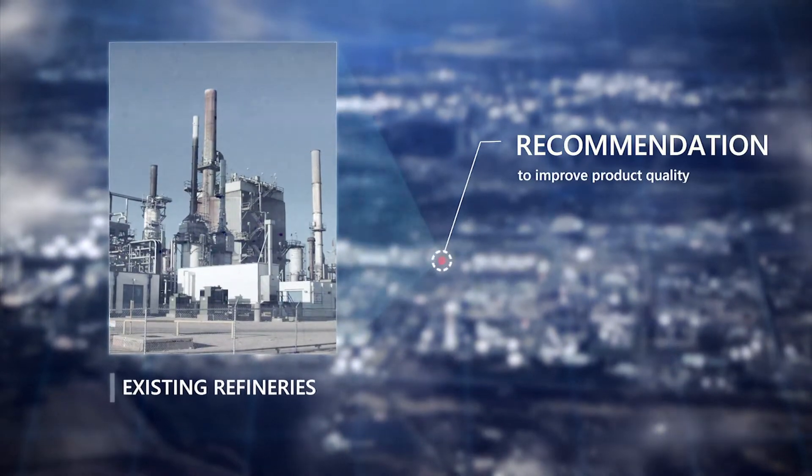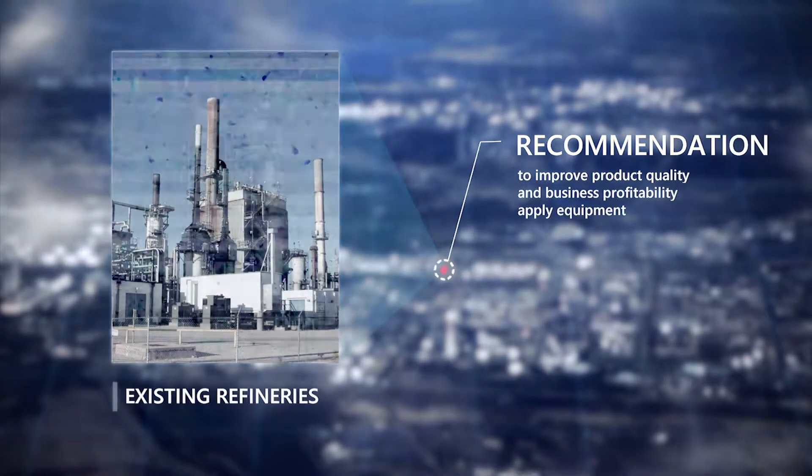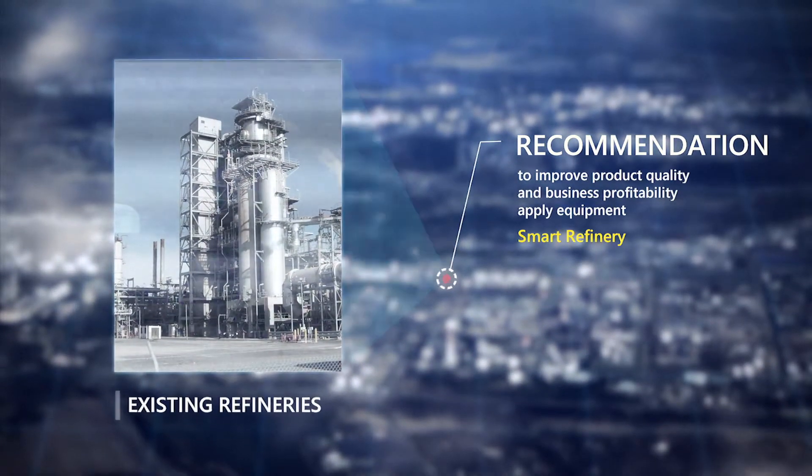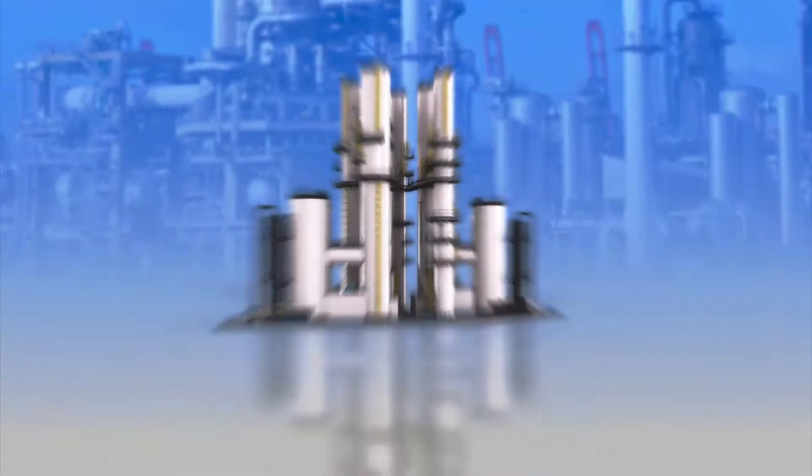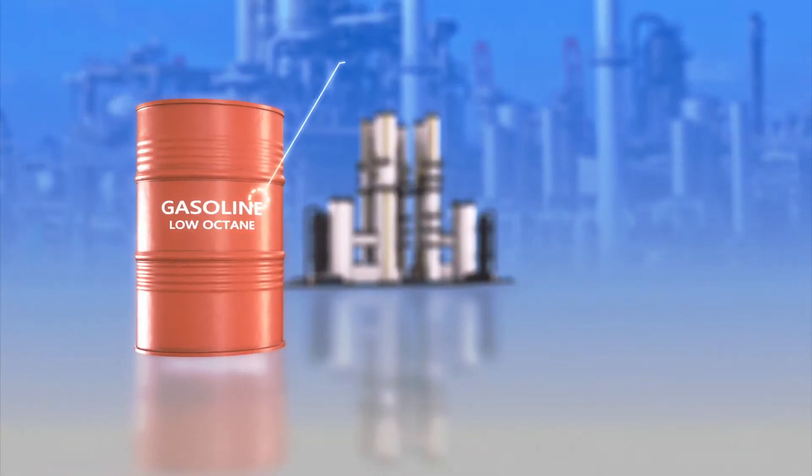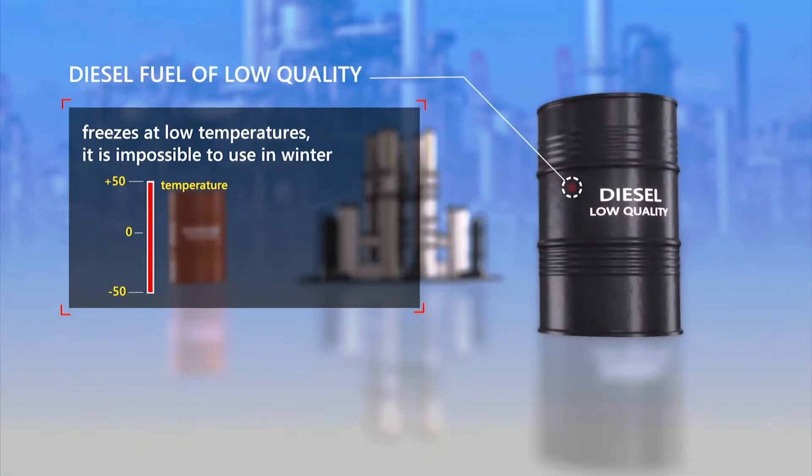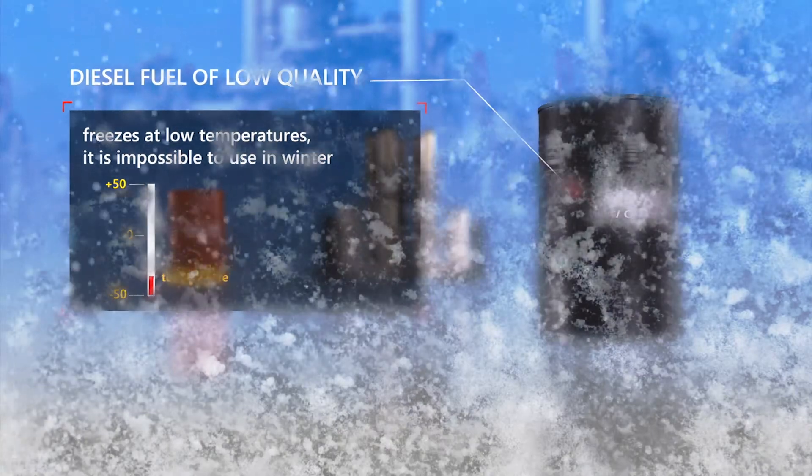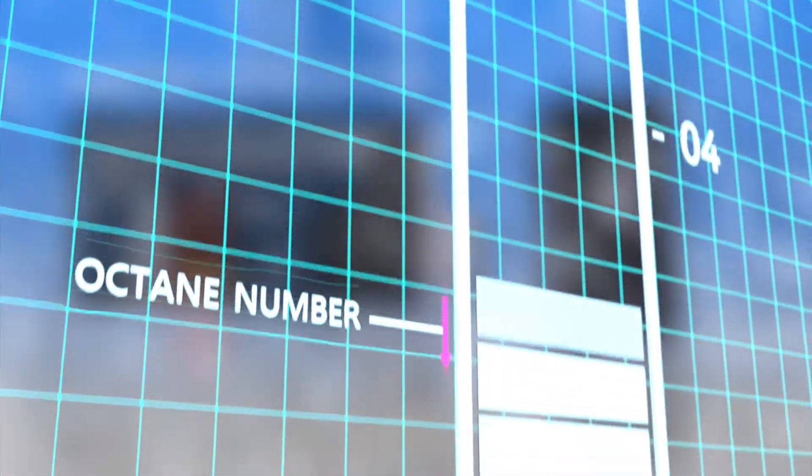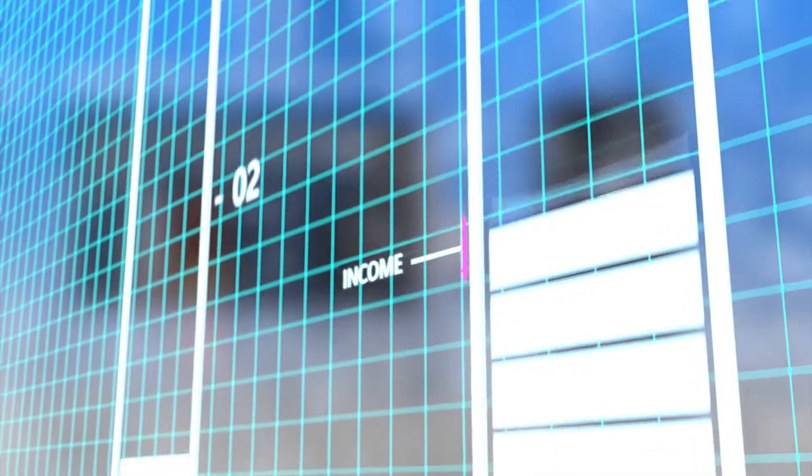Many existing mini refineries need smart refinery equipment to improve product quality and profitability. Today, they can produce only low-octane gasoline unsuitable for modern cars and diesel fuel that solidifies at negative temperatures and cannot be used in winter. These products are of poor quality and yield low profits for the producer.